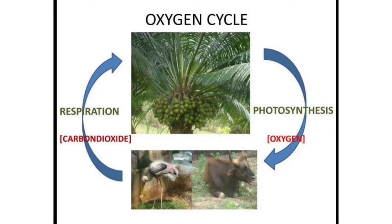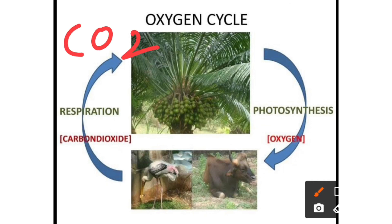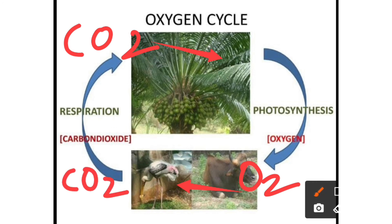This is the oxygen cycle. Plants release oxygen, which is taken by animals. Animals then release carbon dioxide, which is taken in by plants, and plants then release oxygen again. So it becomes a cycle — this process continues.